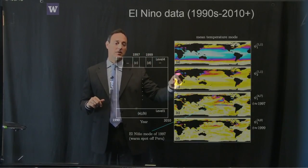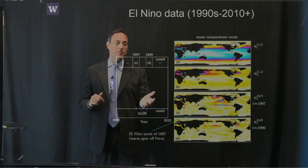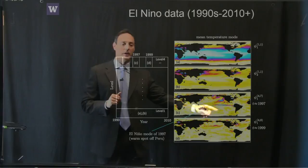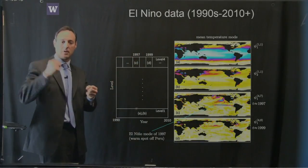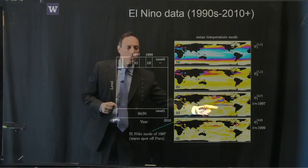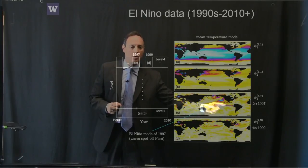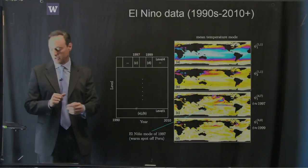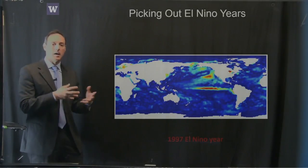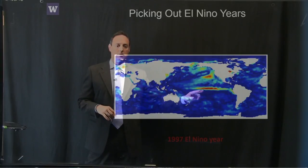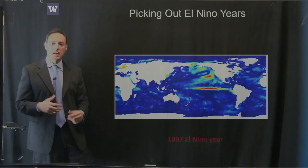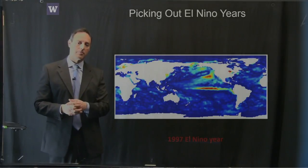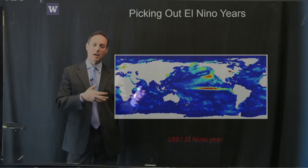There's also a mode with approximately a yearly cycle that we can take out at this level. As you advance in levels, at level four you can find — in 1997 — this mode right here. It just pops out: a mode with a lot of energy, and this is the El Niño mode. Right off the coast of Peru you see a large warm body of water. Whereas in 1999 it does not appear. 1997 was known to be a very strong El Niño year, and the algorithm found it without being told to look for it.